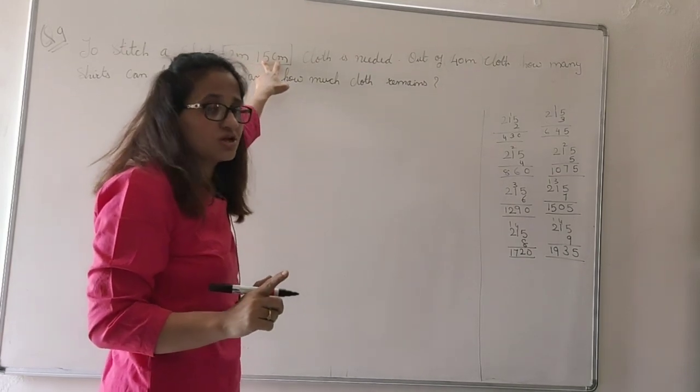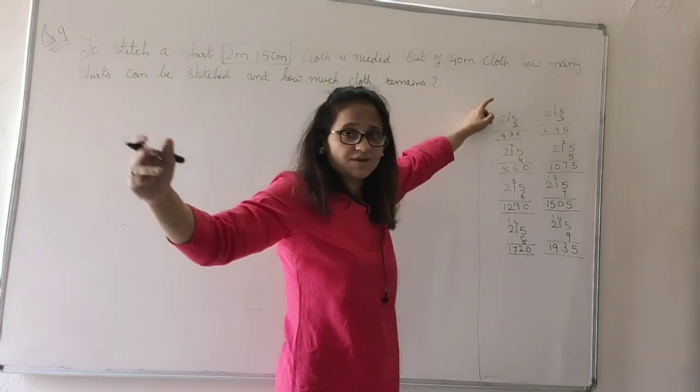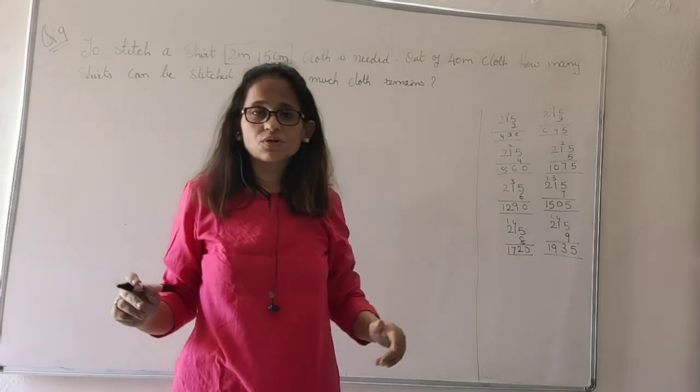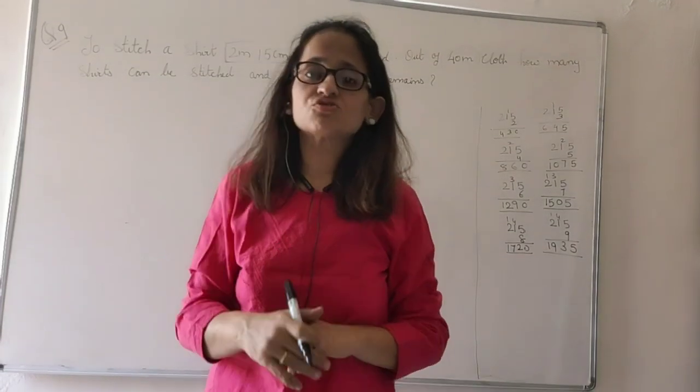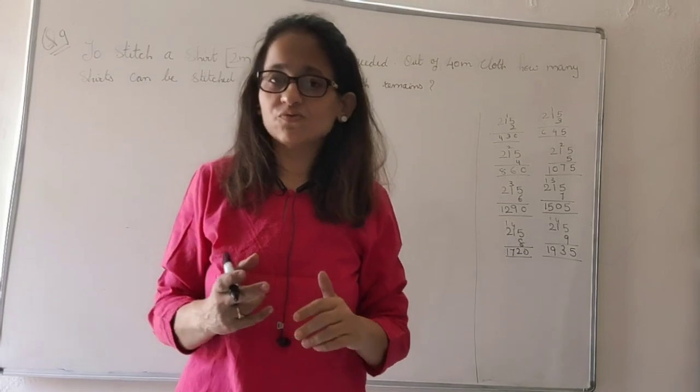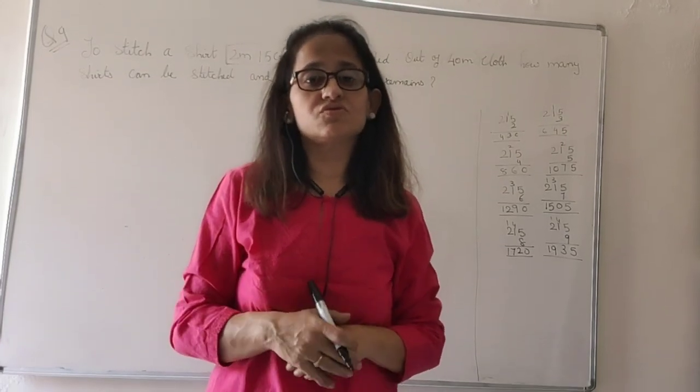One shirt needs 2 meters 15 centimeters cloth. How much cloth I have? I have that big roll. From that big roll, how many shirts would be stitched? Now would you find which operation we have to use? We have to use division.